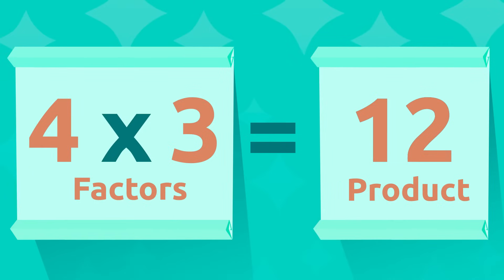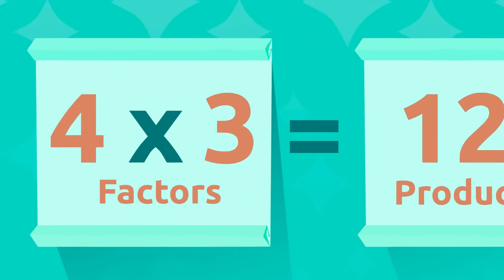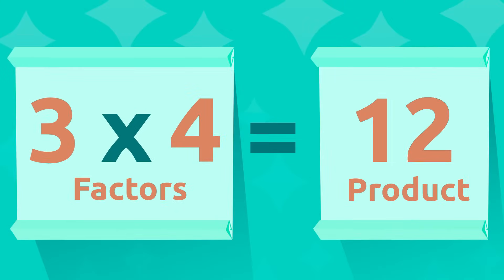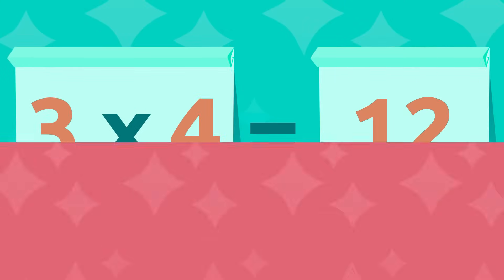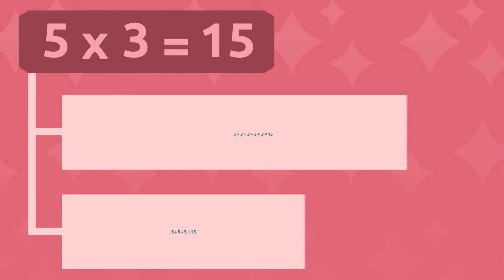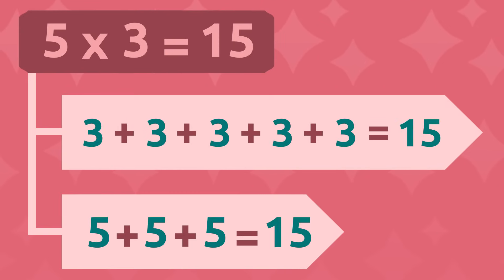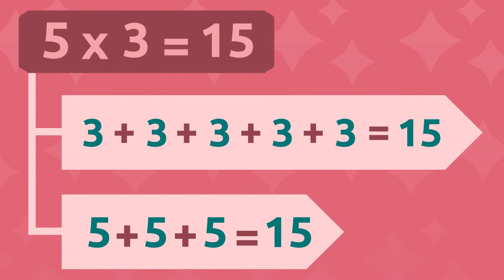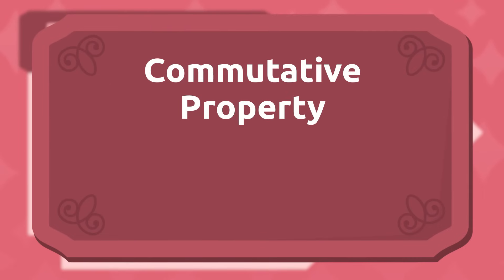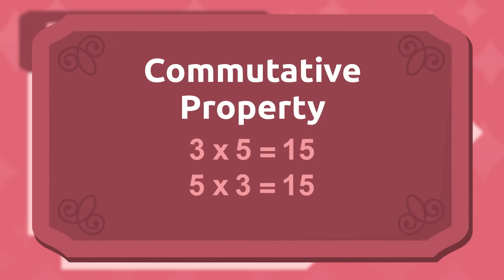It's also important to know that the order in which we multiply the factors is not significant, because even if we switched that order, we'd still get the same result. For example, three by five is the same as three plus three plus three plus three plus three, which equals fifteen. And five by three is the same as five plus five plus five, which also equals fifteen. This means the result of multiplying three by five is the same as multiplying five by three. We call this the commutative property of multiplication — the order of factors does not change the product.